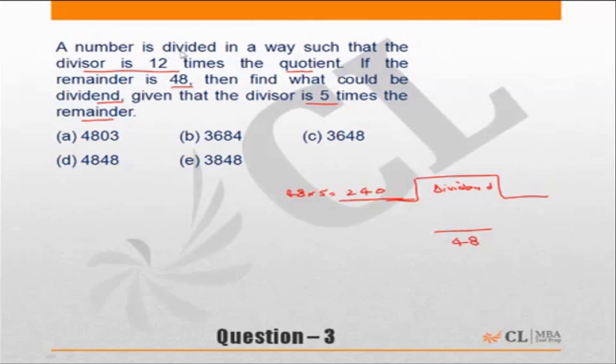A number is divided in such a way that the divisor is 12 times the quotient. So the quotient has to be 240 by 12, which is equal to 20.